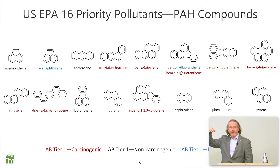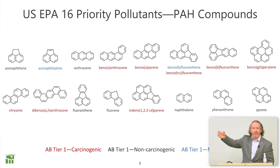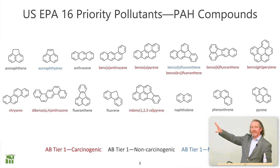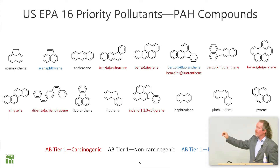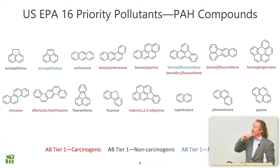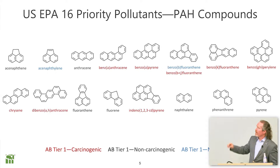You've always heard of the EPA priority 16 pollutants — these are the 16 listed here in alphabetical order, showing you the different compounds and their different structures.